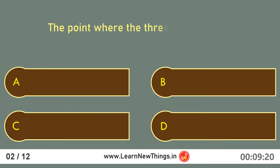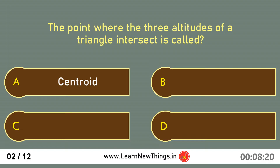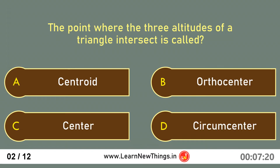The point where the three altitudes of a triangle intersect is called the orthocenter.